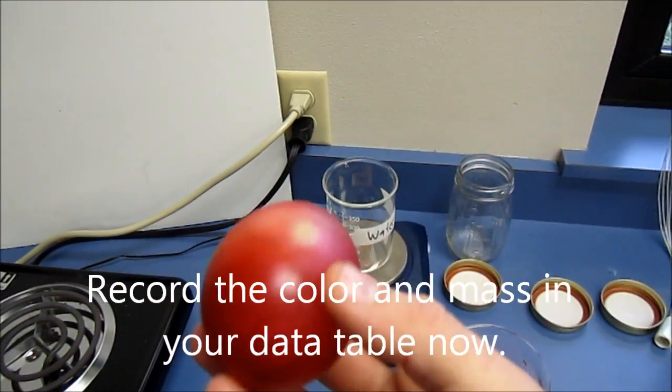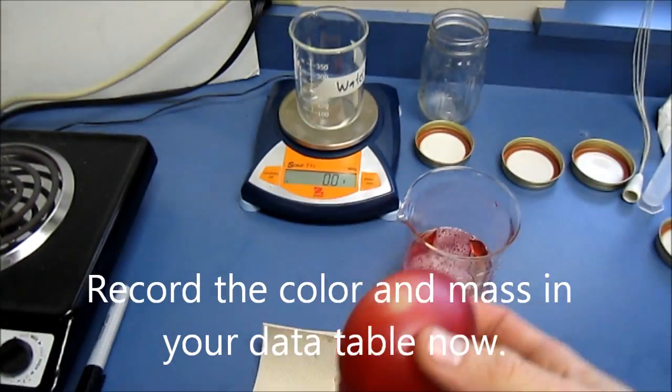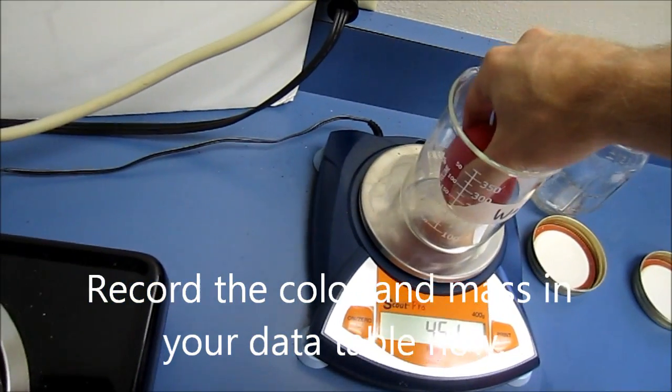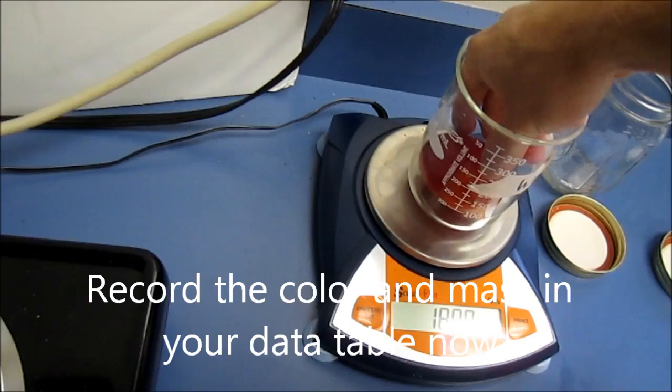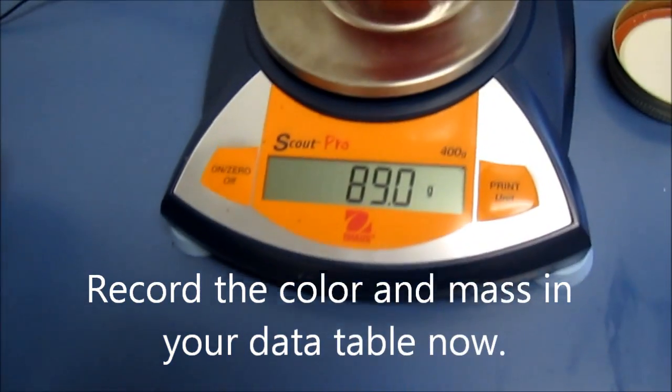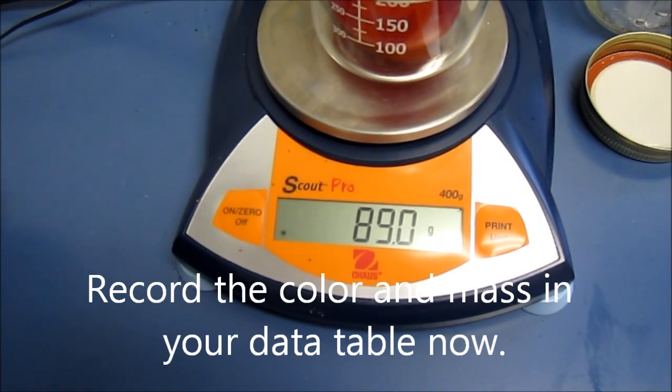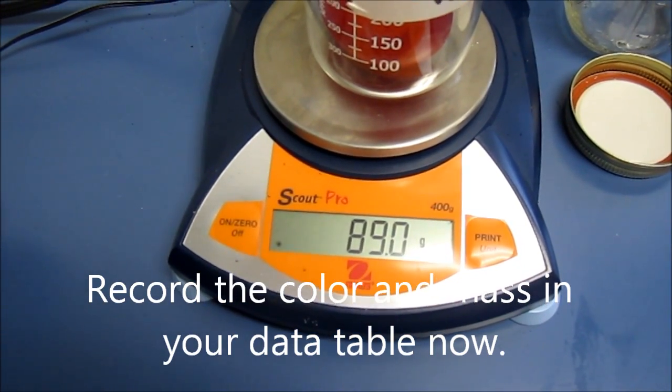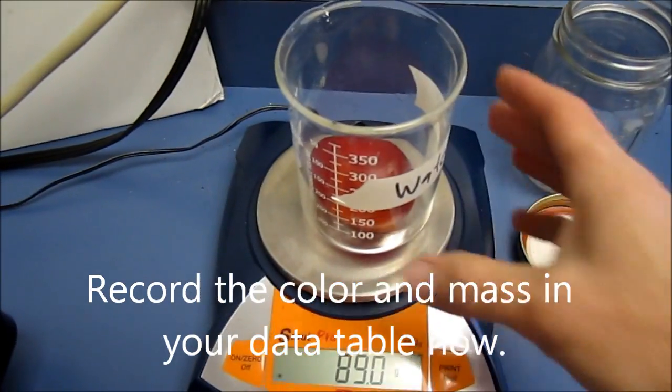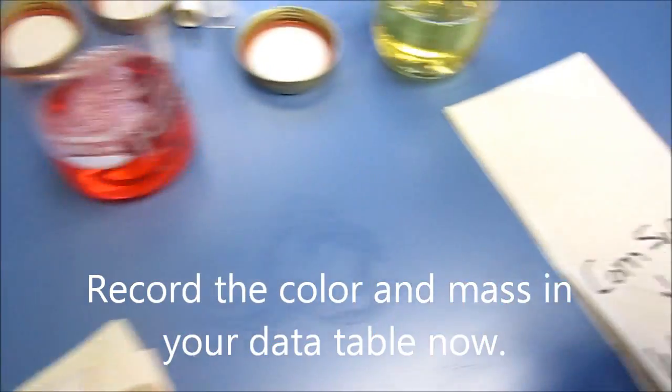Again, notice that bright red color. You can see the yolk in there. That's the yellow spot. It looks like the final mass of this egg is 88, let's call it 89.0 grams. And clearly the egg has gained mass. So again, if that was your prediction, your hypothesis was supported.